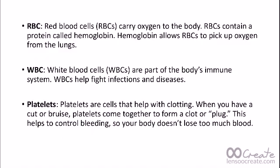In detail, there are three main components of the bloodstream. These are RBC, WBC, and platelets. These are cells with different structure, types, and functions. RBCs are red colored cells.